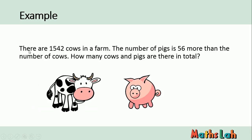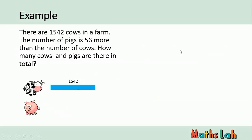In the first example, there are 1542 cows in the farm. The number of pigs is 56 more than the number of cows. How many cows and pigs are there in total? Please take note of these numbers, and here is the worked solution.